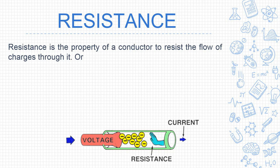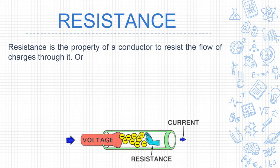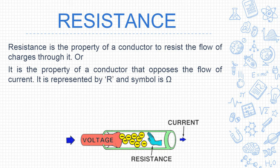Resistance means resist — resist means to stop. Resistance is the property of a conductor that opposes the flow of current. It is represented by capital R. Its symbol is ohm. As shown in the figure, voltage is applied and there are charges; the resistance opposes the flow of those charges.